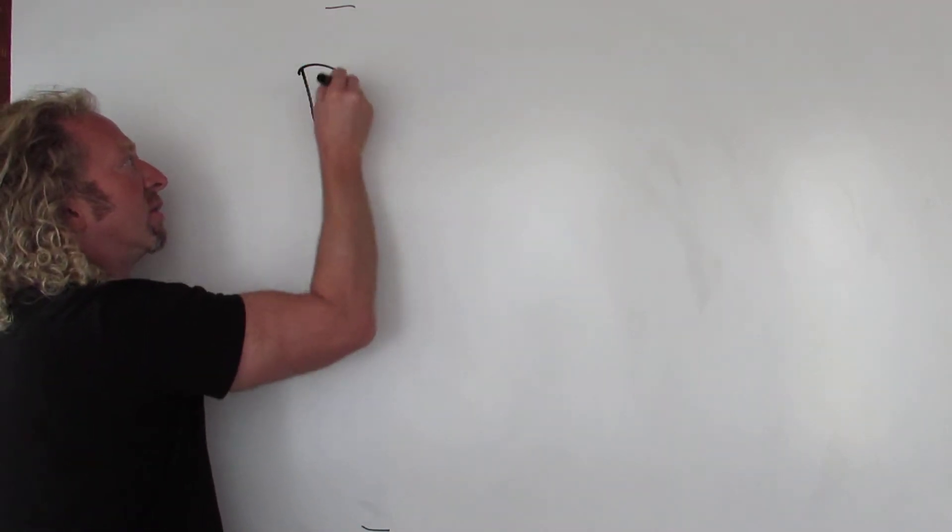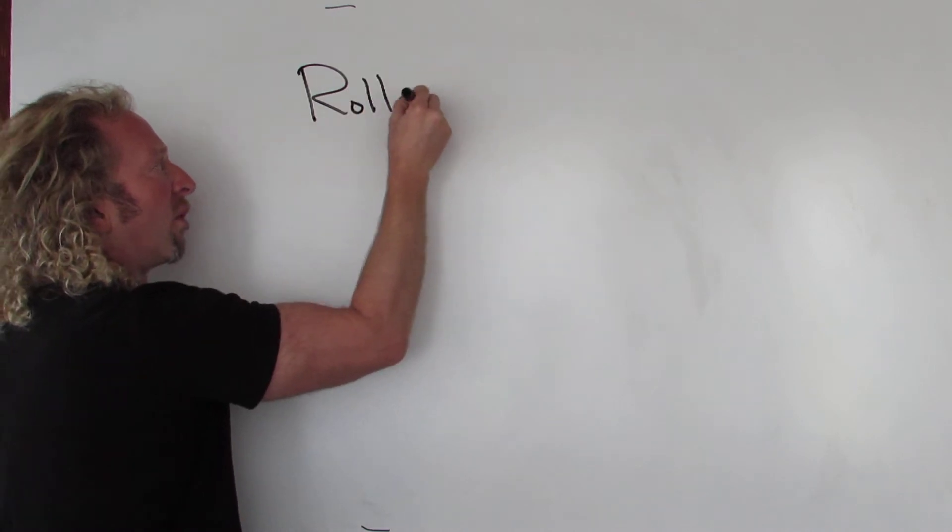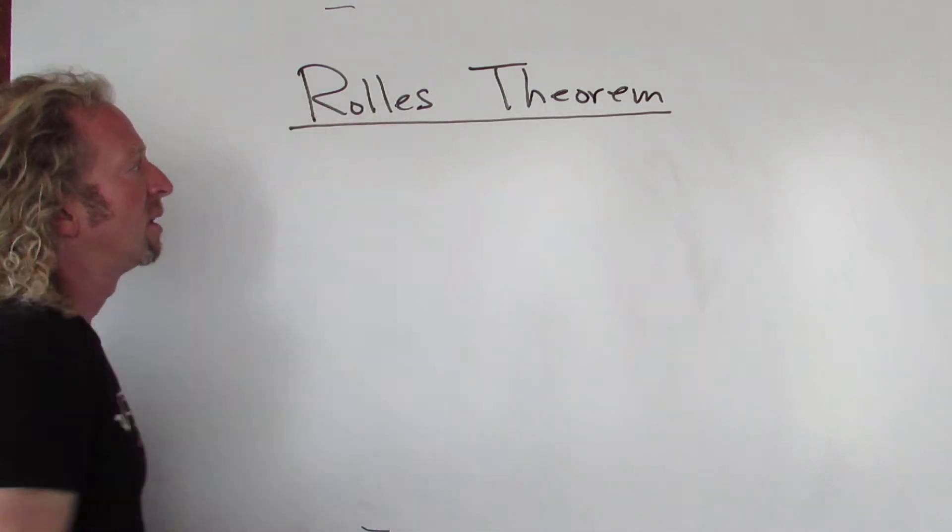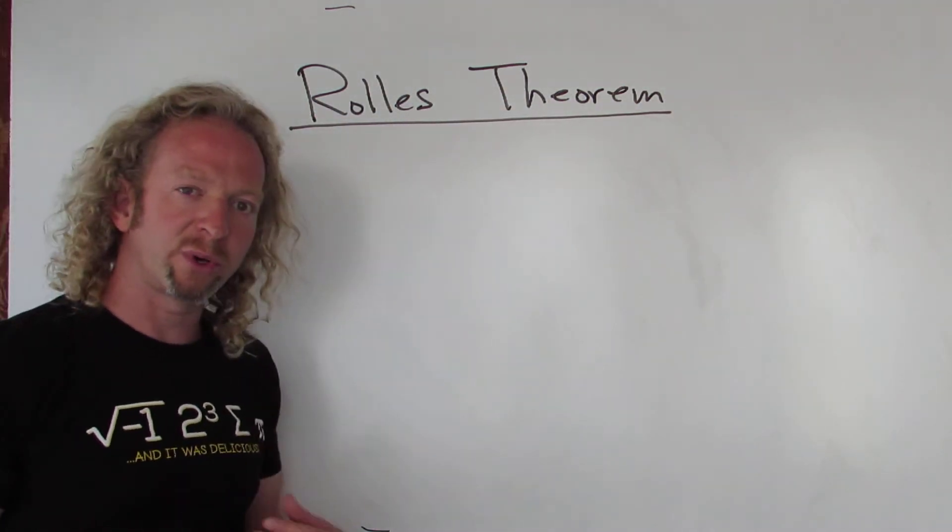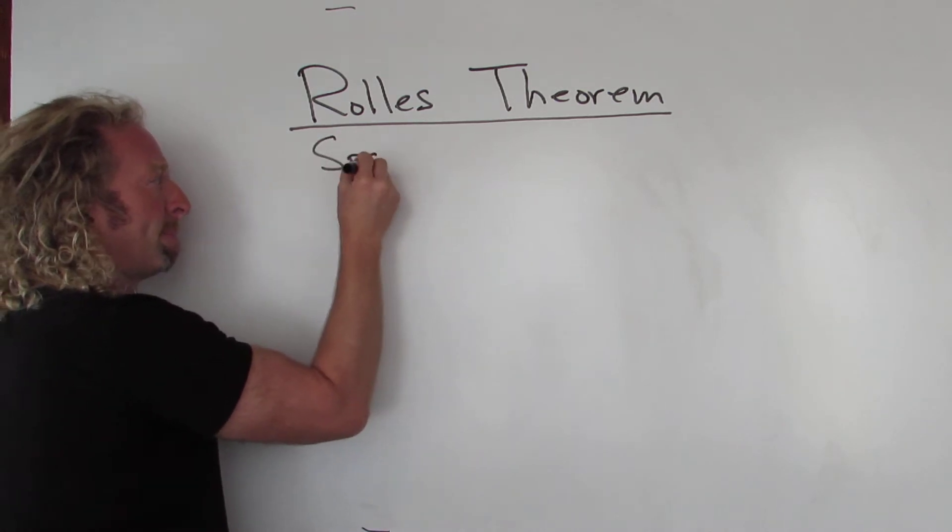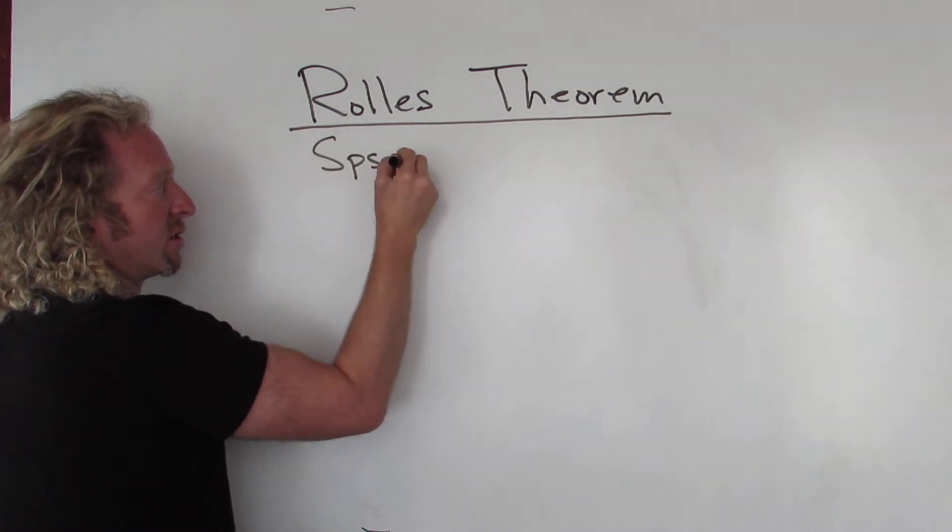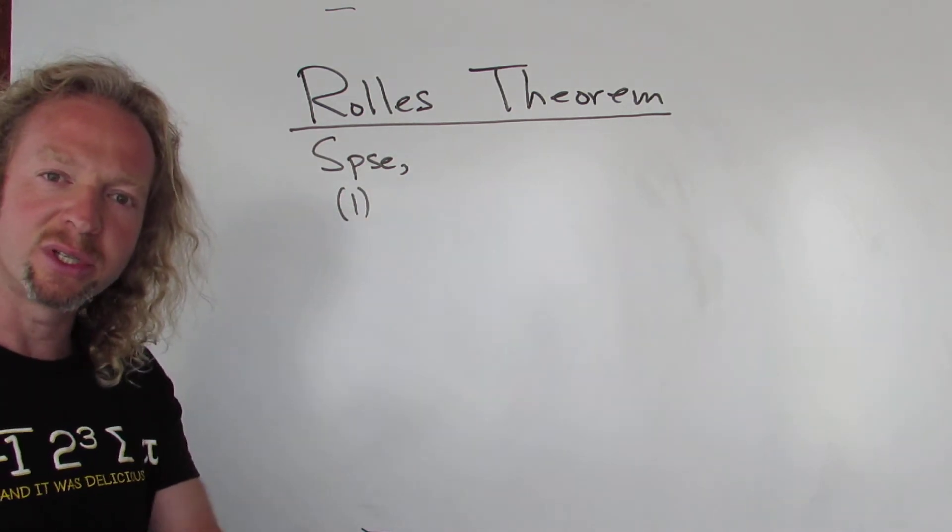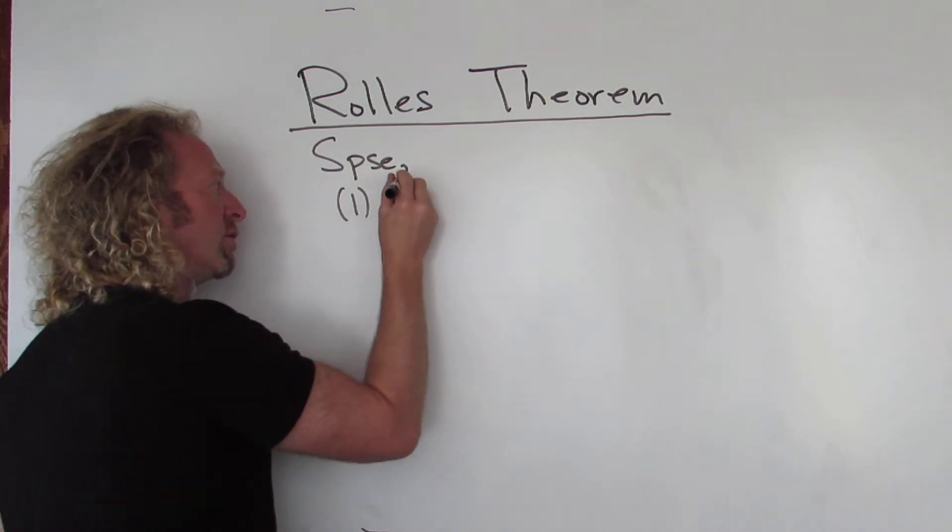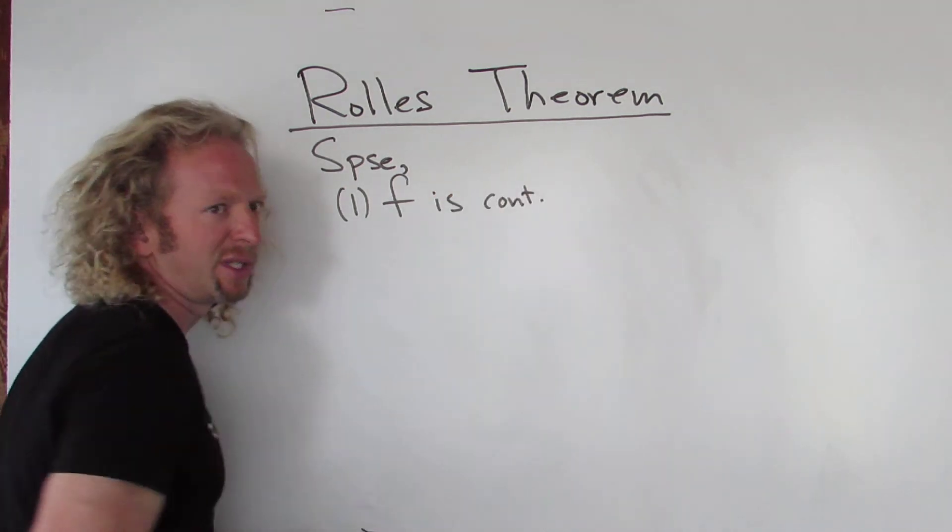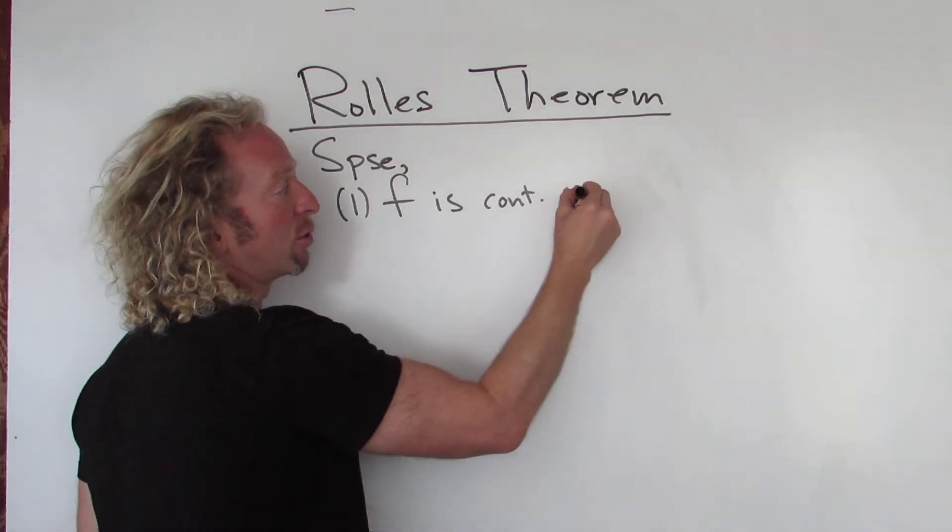Rolle's Theorem. The conditions for Rolle's Theorem are really important. So let's state them carefully. So suppose there are three conditions. The first condition is that your function is continuous on a closed interval. So f is continuous on, say, the closed interval [a,b].